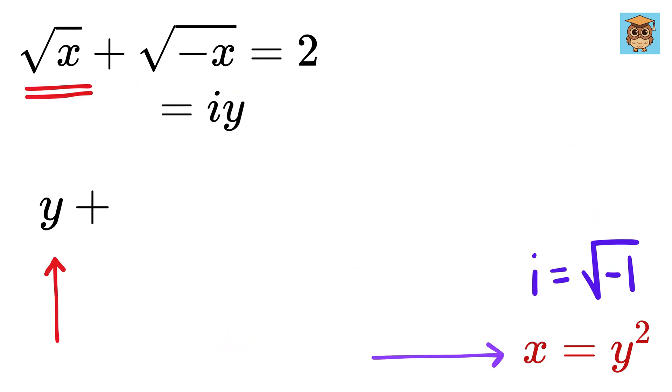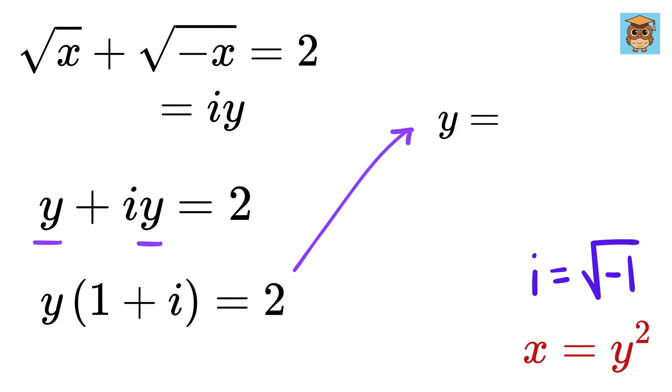Thus, we have y plus iy equals 2. Take y as common to get y times 1 plus i equals 2. Thus, y equals 2 over 1 plus i.